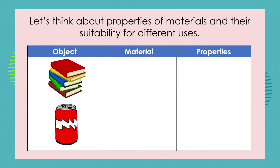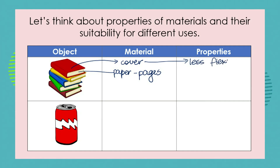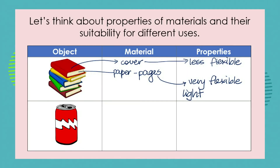What about books? We've got two different types of paper — the paper that makes up the pages and the paper that makes up the cover. The cover is less flexible or less bendy than the pages, which are very flexible. They're also very lightweight, so you can put the book in your bag and carry it around. Imagine if books were made out of stone — we wouldn't be able to carry them and it would be very difficult to turn the pages.